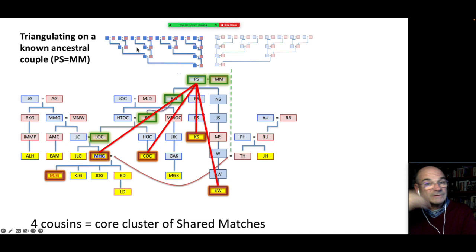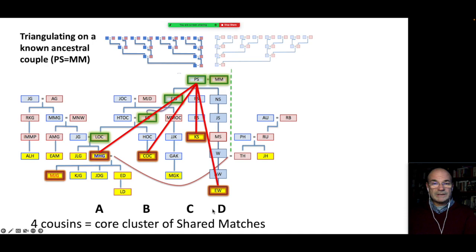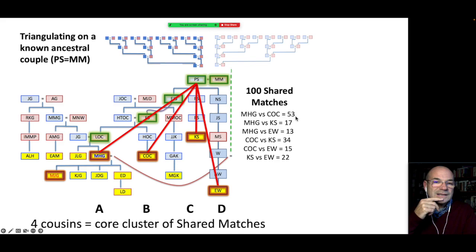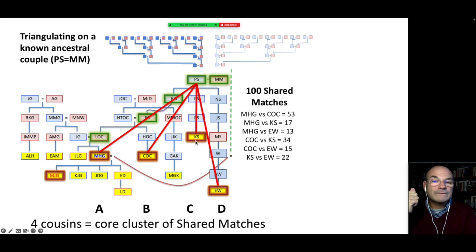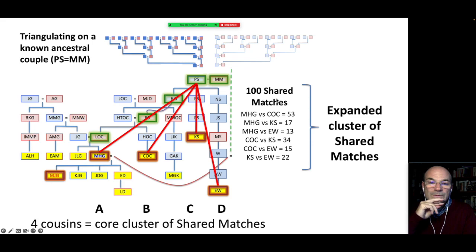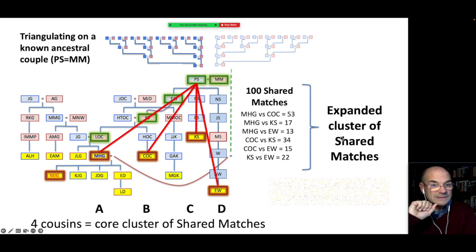The DNA may have come from the Spirin side of the family, which is what I was interested in, or the Morgan side. So I called these four descendants A, B, C, D and simply compared A against B, A against C, A against D, B against C, B against D, and C against D — six pairwise comparisons. This gave me 100 DNA matches shared by at least any two of the four descendants of Patrick Spirin and Mary Morgan, forming the expanded cluster of shared matches.